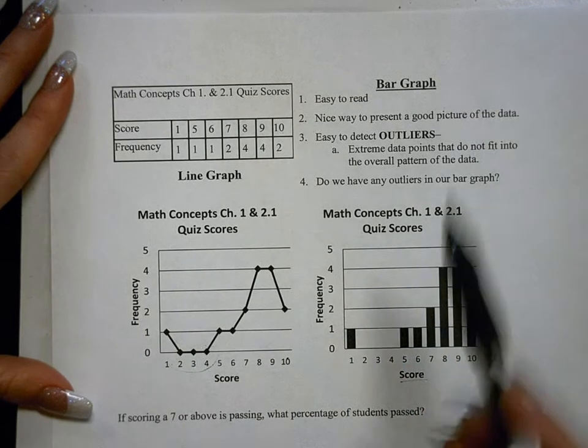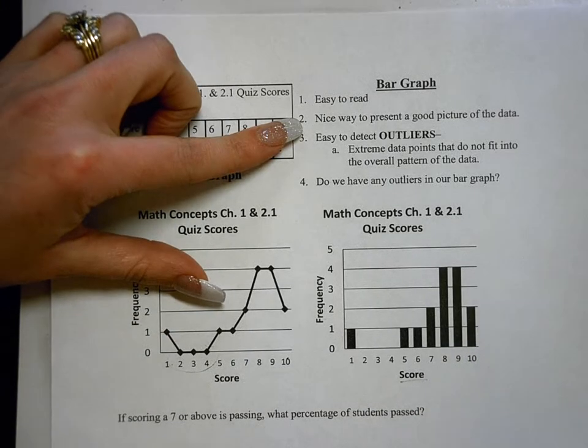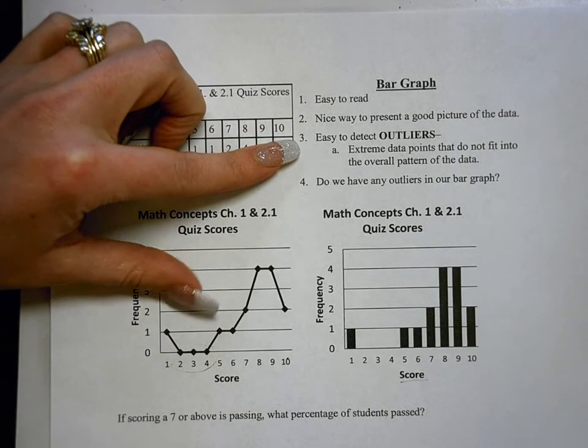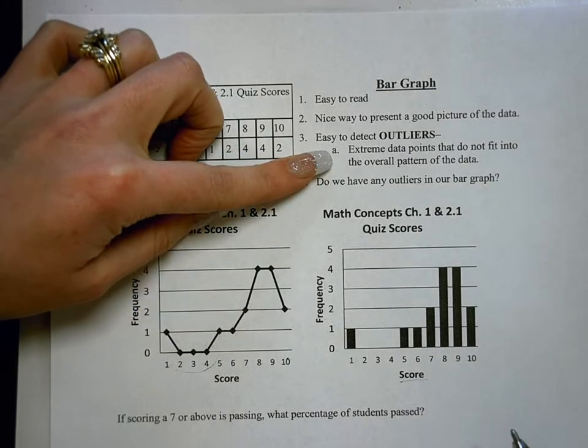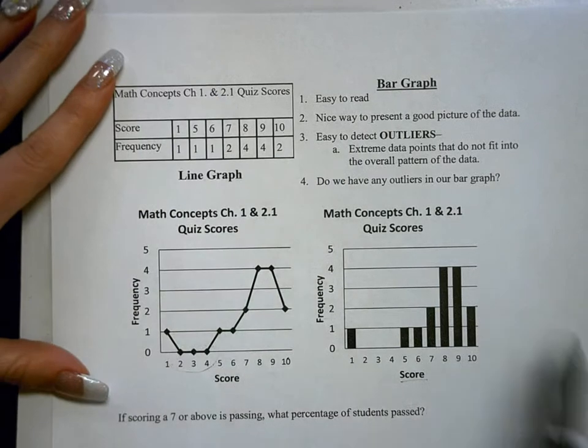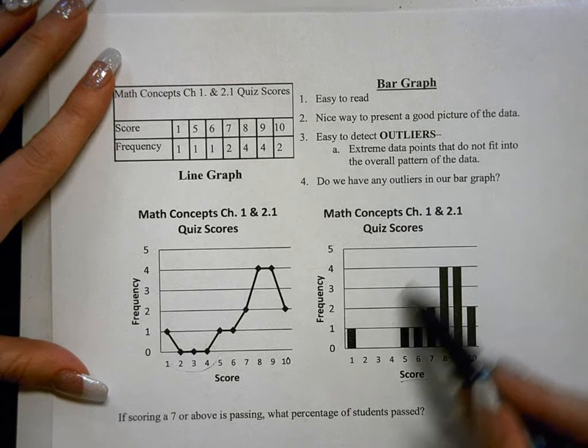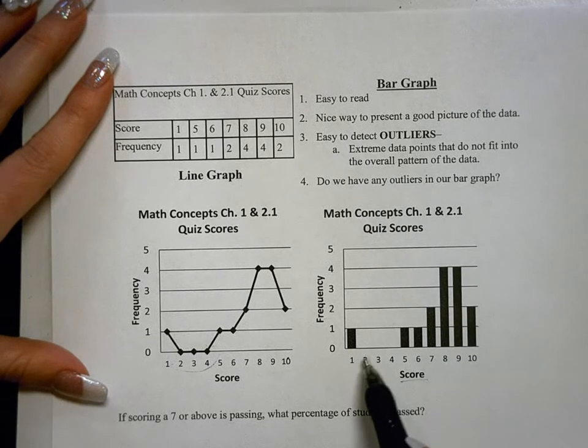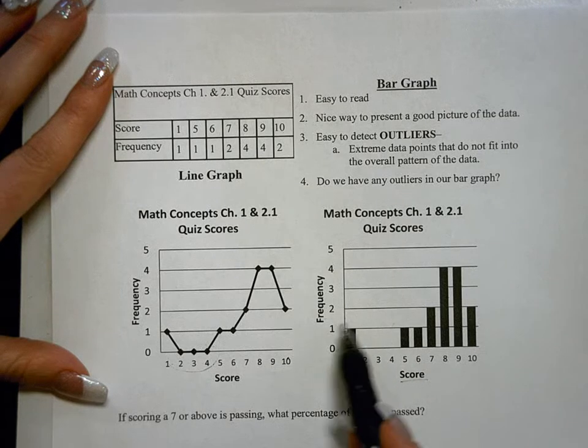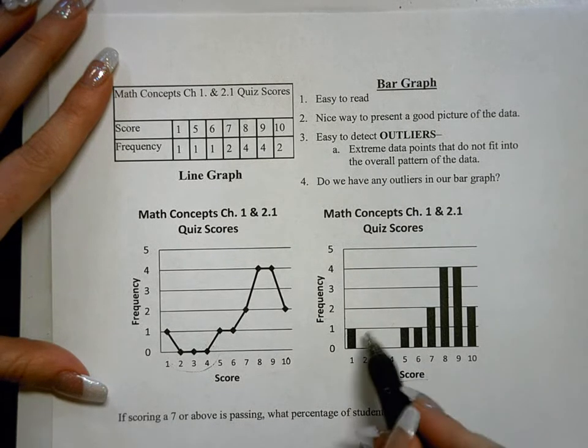Now the nice thing about a bar graph is that they're easy to read. It's a nice way to present a good picture of the data. And it's easy to detect outliers. Now what outliers are, those are extreme data points that do not fit the overall pattern of the data. And if we look at this example right here, this bar graph, we can see that most of the scores are clustered in this area. And then there's a bunch of space where no scores were obtained. And then there's one person that scored a 1. Now this is an outlier.